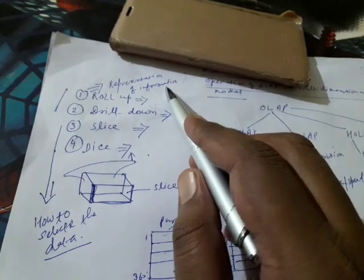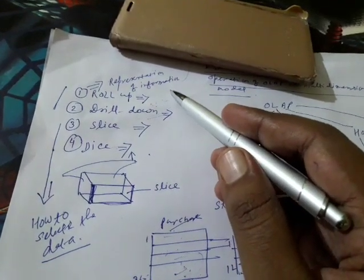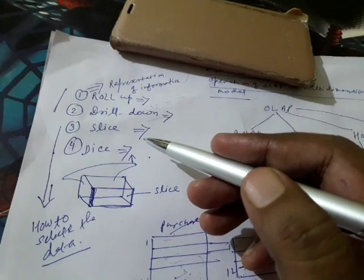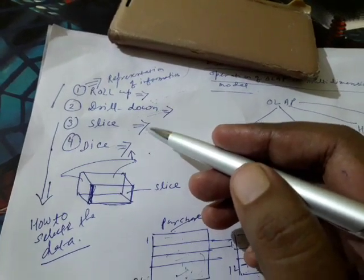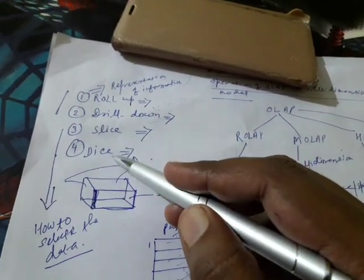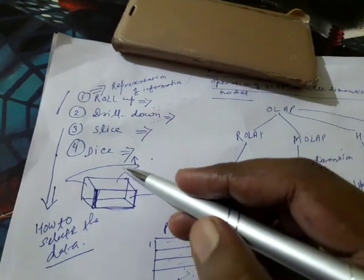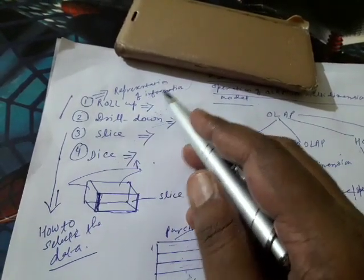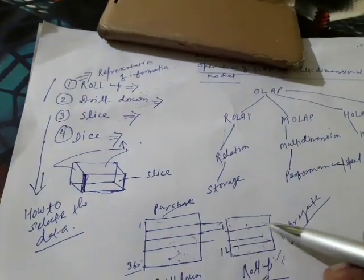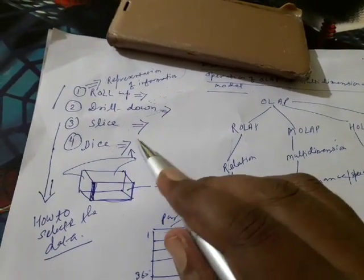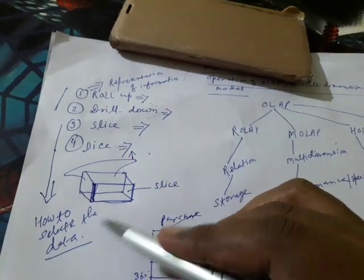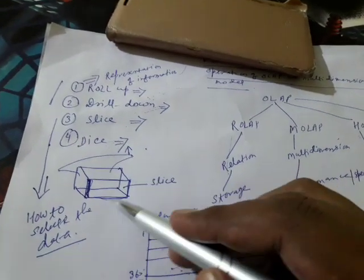Roll-up and drill-down are operations that represent information — whether in detail view or aggregate view. Slice and dice are two other operations. Students get confused thinking roll-up and drill-down are the same as slice and dice — they are not. Roll-up and drill-down relate to how information is represented (detail vs. aggregate), while slice and dice are operations about how to select data from the database.